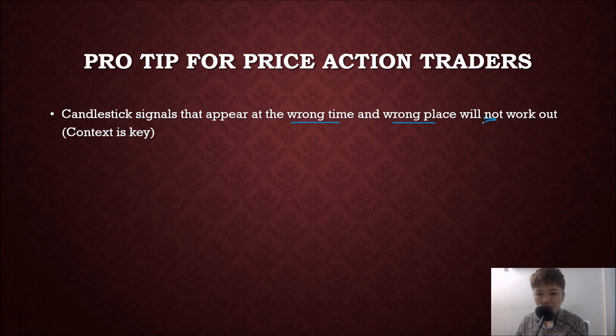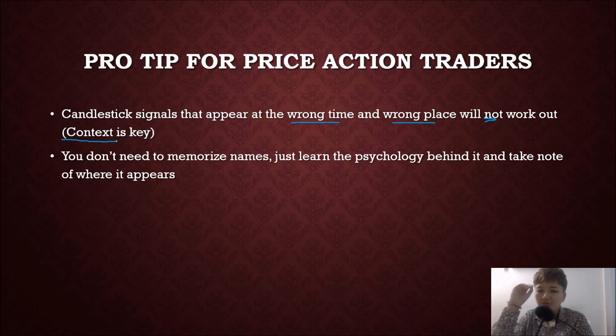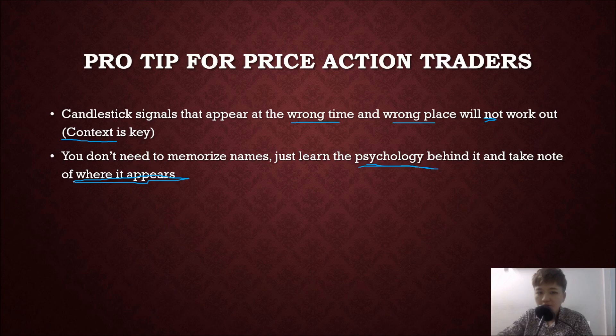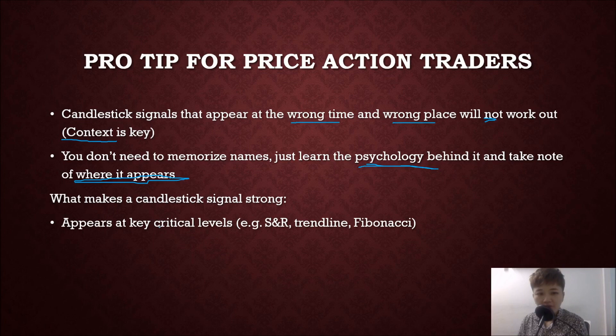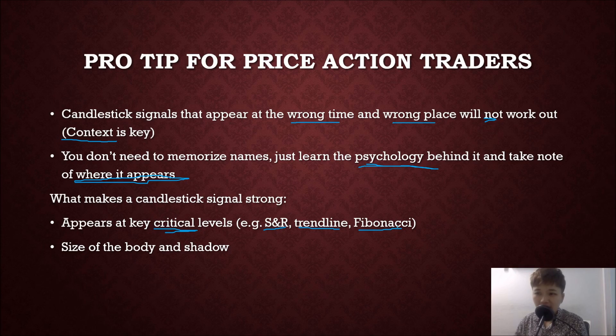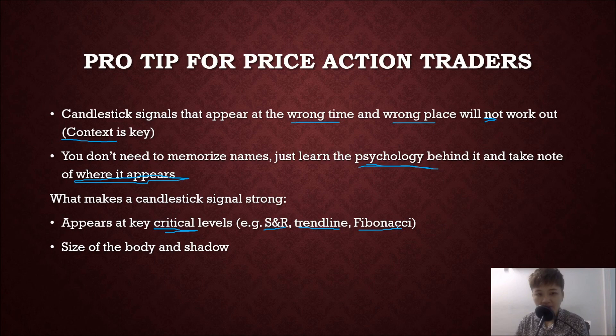You don't really need to memorize the names of candlestick patterns — just understand the psychology behind them and note where they appear. What makes a candlestick signal really strong? It appears at the right place at key critical levels — support, resistance, trend lines, or Fibonacci levels. For some candlestick signals the larger the body the stronger it is, but for others the smaller the body the stronger. Similarly, for some the longer the shadow the better, and for others the shorter the shadow the better — it depends on the pattern.